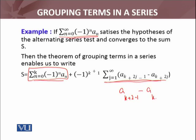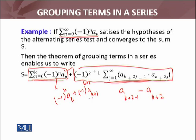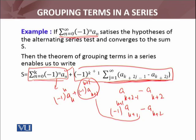The sum here gives us a_{k+2} minus a_{k+1}. The last term of the grouped portion is minus 1 raised to power k times a_k. The next term is minus 1 raised to power k plus 1 times a_{k+1}. We have checked the group: the first term is a_{k+1} minus a_{k+2}, and minus 1 raised to power k plus 1 is exactly the first term of that grouping.